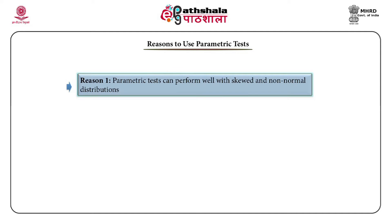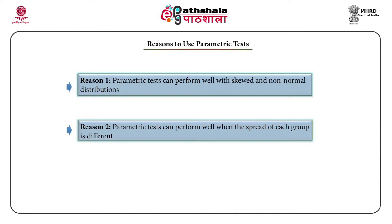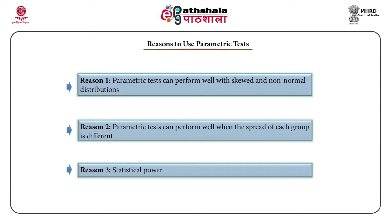Reasons to use parametric tests. First, parametric tests can perform well with skewed and non-normal distributions. Second, parametric tests can perform well when the spread of each group is different. Third, statistical power: parametric statistical tests show more robustness in terms of interpretive understanding and analytical discussions.